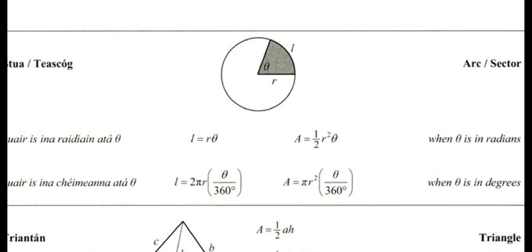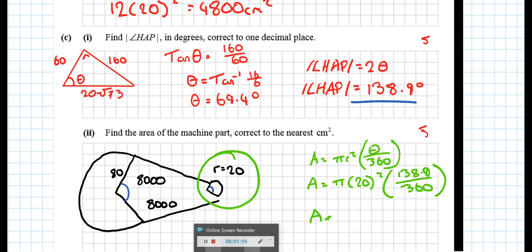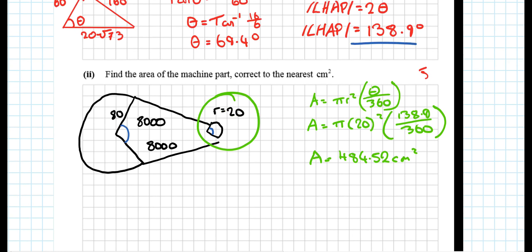So let's deal with the small section first. We are going to be using degrees. And we want the area. So it's pi r squared. Area is equal to pi r squared theta over 360. So the area is pi 20 squared 138.9 over 360. And that area works out to be 484.52 centimeters squared.